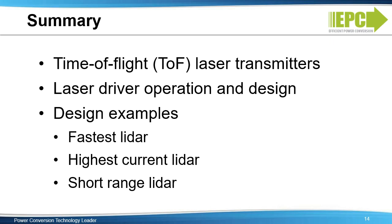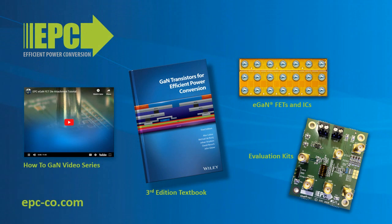In this video, the benefits of GaN for LIDAR systems were discussed. First, key specifications of time of flight LIDAR transmitters were shown. Then, a detailed explanation of laser driver operation and design was examined. Finally, examples of hardware implementation and measurement results were discussed for fastest, highest current, and low-voltage LIDAR applications. For more information, see the third-edition textbook GaN Transistors for Efficient Power Conversion, view more videos in the How To GAN series, or visit epc-co.com.